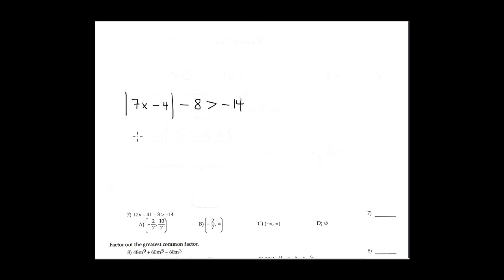Number seven is the last inequality that contains absolute value. You isolate the absolute value expression: negative fourteen plus eight equals minus six. So far we have absolute value of 7x minus 4 greater than negative six. Remember when the right-hand side is negative.